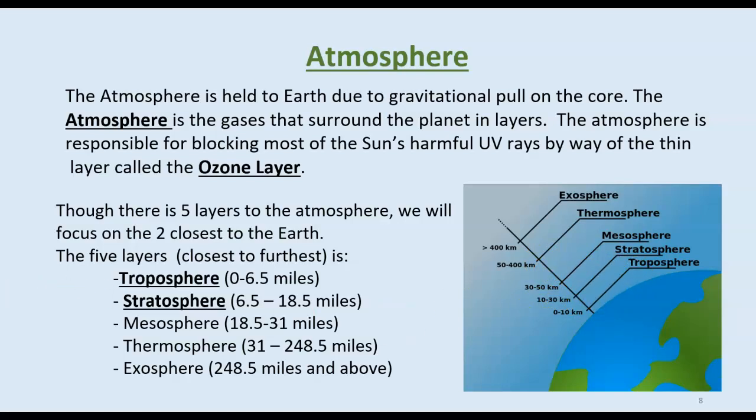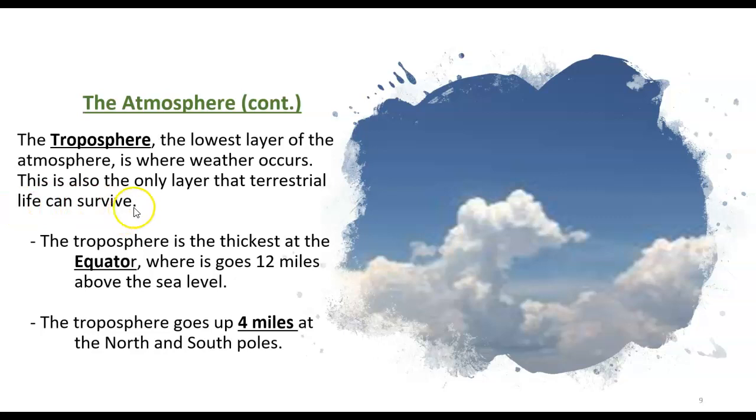As mentioned, we live in the troposphere. The troposphere is the lowest layer of the atmosphere. It's where weather occurs and the only layer where terrestrial life can survive. The troposphere is thickest at the equator, going about 12 miles above sea level at the equator, and also goes up about 4 miles at the North and South Pole.